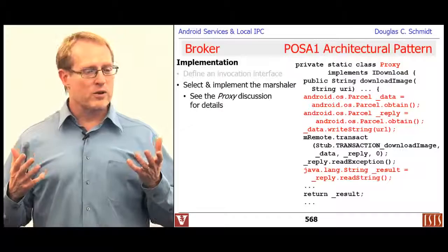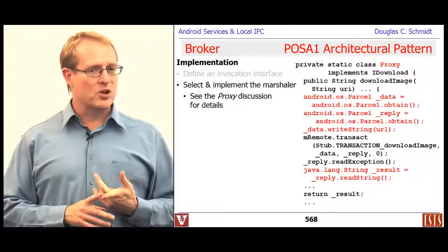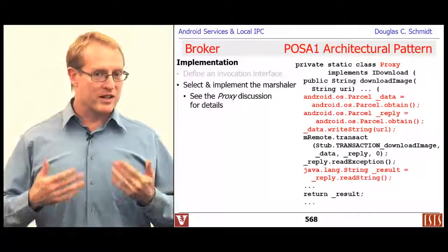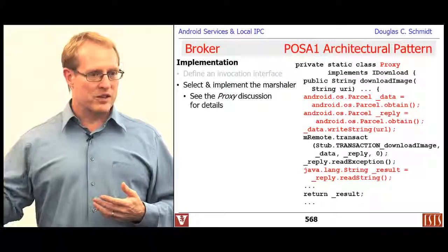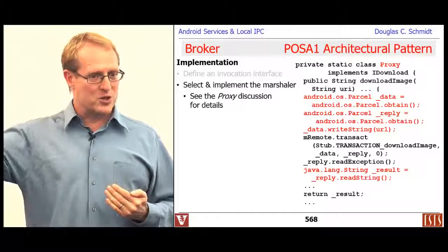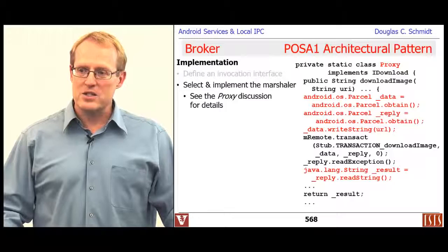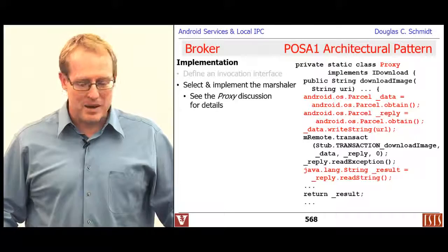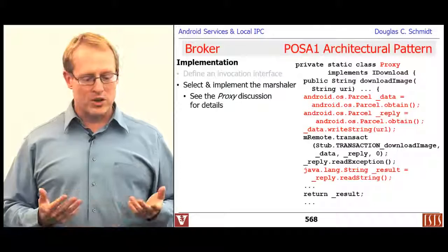The next thing you need to do is select and implement the marshaller. There are three or four main things in the broker pattern: you've got the client, a requester which is the client-side part that invokes an operation, a marshaller and demarshaller responsible for serializing and deserializing messages, and a dispatcher responsible for dispatching requests to the servant. The marshaller is typically handled by the proxy pattern, so I won't talk much about it here.